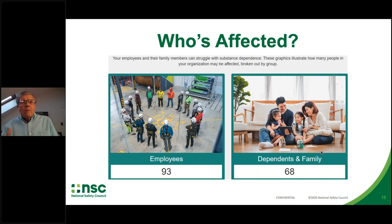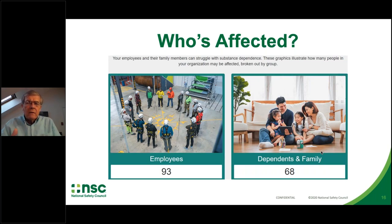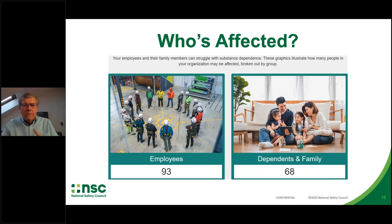We can get a reasonable estimate of how many employees and how many of their family members are likely to have a serious substance use disorder. In this case, 93 out of 500 employees in construction in Nevada are likely to have an untreated substance use disorder in your workforce. You may not know that they are there, but based on evidence from large surveys, this is about the number you would expect — and they could receive effective treatment and recover.